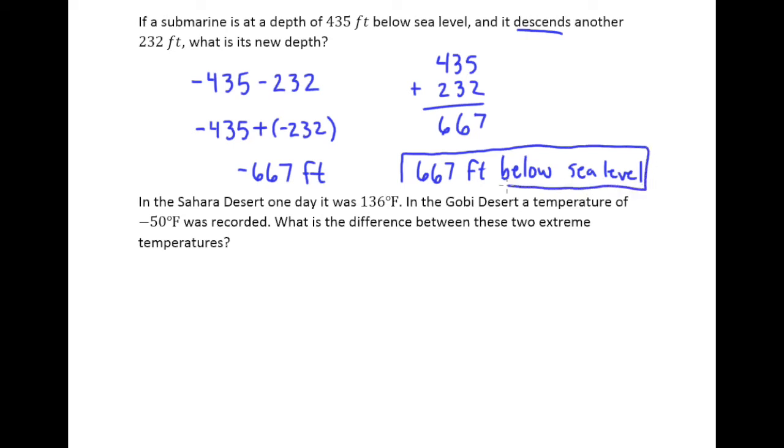What would be incorrect is to say negative 667 feet below sea level. That would be incorrect because you'd be saying a double negative. So either negative 667 feet, or what I think is better, 667 feet below sea level.